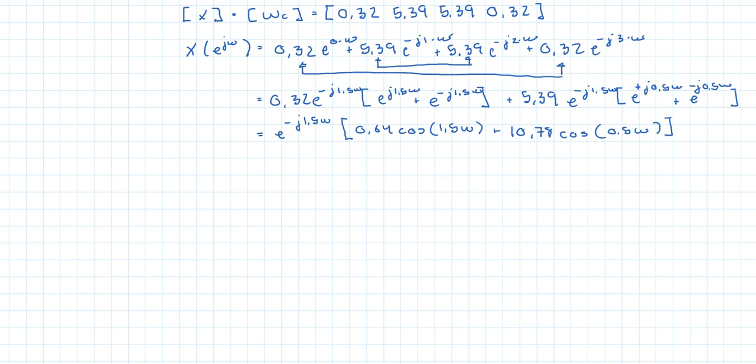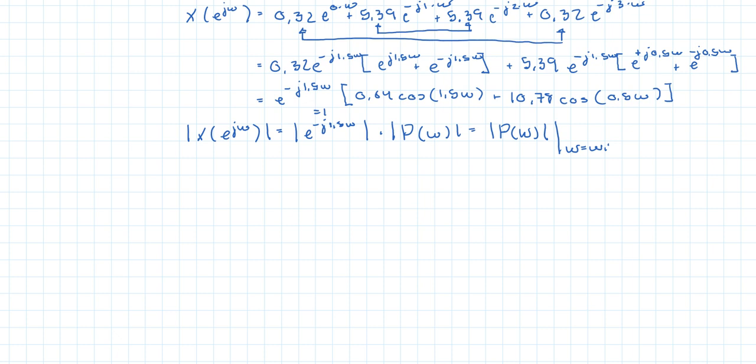So if we want to get the modulus, the modulus of e^(jω), well that's just the modulus of the exponential, which is equal to 1 multiplied by the modulus of p(ω). The phase, well it's the phase of the exponential term, which is minus 1.5ω plus the argument of the polynomial. That's really just sum k times π.